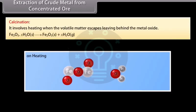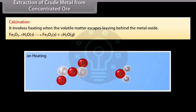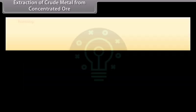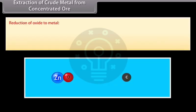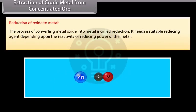Calcination: It involves heating when the volatile matter escapes leaving behind the metal oxide. Roasting: It is a process in which ore is heated in regular supply of air at a temperature below the melting point of the metal. Sulphide ores are converted into oxide by roasting. Reduction of oxide to metal: The process of converting metal oxide into metal is called reduction. It needs a suitable reducing agent depending upon the reactivity or reducing power of the metal. For example, carbon, carbon monoxide, aluminium and magnesium.